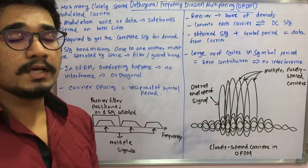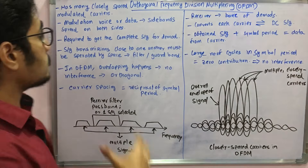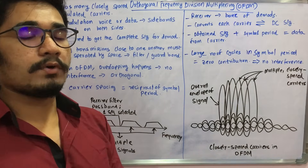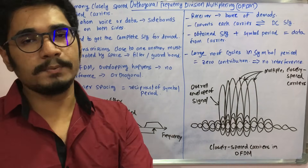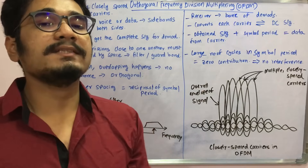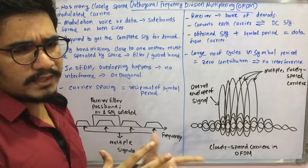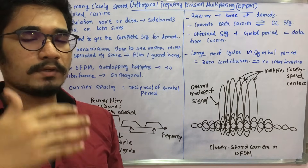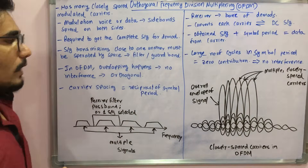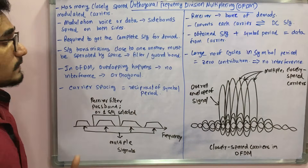This modulation can be done over voice or data, and there will be a number of side bands spread on both sides. You need to get the complete signal for demodulation by the receiver. Modulation takes place on one side and the receiver on the other side will receive all the side bands. Signal transmissions close to one another must be separated with some filtration mechanism or protection bands — we call them guard bands — in traditional schemes.